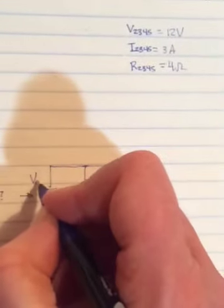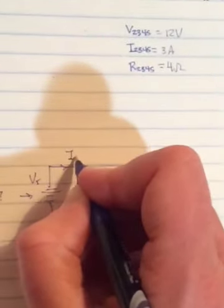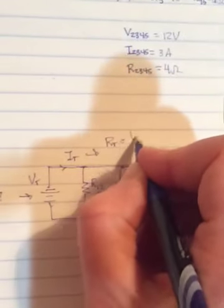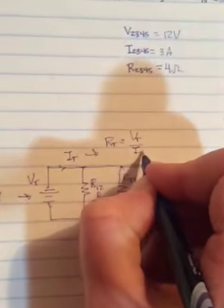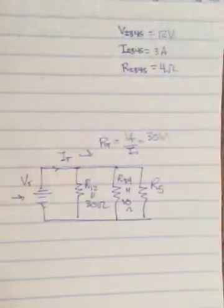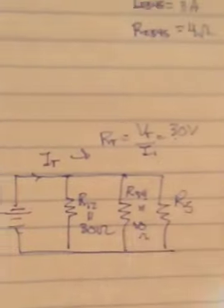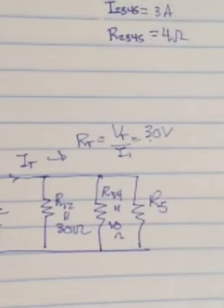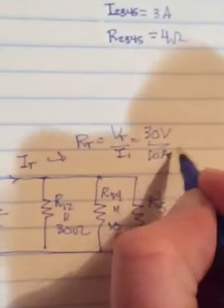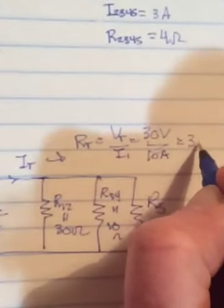And then we have our V total, we have our I total, so we can get our R total. Because R total is just going to be V total over I total. And so it's going to be 30 volts over 10 amps. So our R total is 3 ohms.